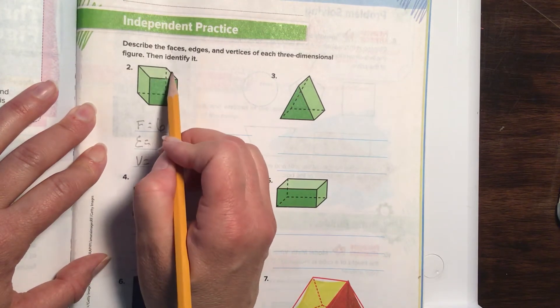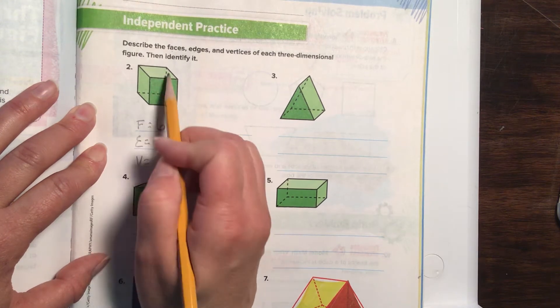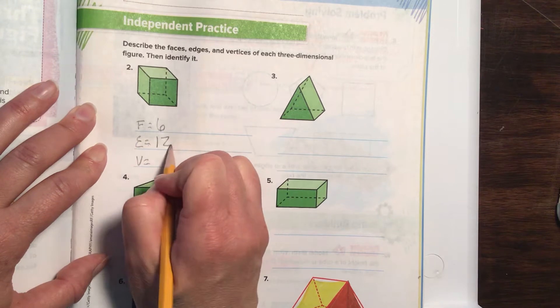Let's count the edges: one, two, three, four. Then again, five, six, seven, eight. And then around the edges, nine, ten, eleven, twelve. There's twelve edges.